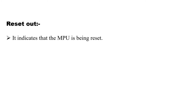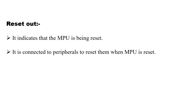RESET OUT indicates that the MPU, that is the microprocessor unit, is being reset — meaning it is refreshed. This pin has a close relationship with the previous pin RESET IN. All the peripherals connected to the MPU have to also reset themselves. RESET OUT is connected to peripherals to reset them when the MPU is reset. So RESET IN is for the microprocessor to refresh itself, and RESET OUT is a signal connected to all the peripherals informing them that the MPU is reset and the peripheral has to reset itself. Reset IN is connected to the MPU and RESET OUT is connected to the peripherals.